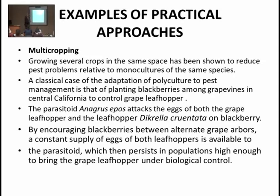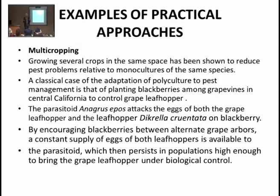A classical example of adoption of polyculture pest management is planting blackberries among grape vines in Central California to control grape leaf hoppers. أحد الأمثلة الناجحة والتي تعتبر من الطرق الكلاسيكية لمكافحة الآفات التي تحدث في شكل انفجاري هي زراعة البلاك بري.